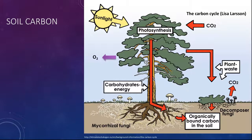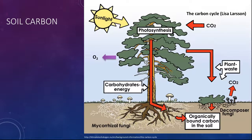Soil carbon is so important. Sunlight, carbon dioxide and water enter plants and they photosynthesize — converting carbon dioxide into carbohydrates or sugars, releasing oxygen as a byproduct which we breathe in. We then release carbon dioxide and the cycle continues. That fixed carbon in sugar form now travels down to the roots, which are associated with fungi that are closely intertwined around the root and spread out, increasing its surface area.